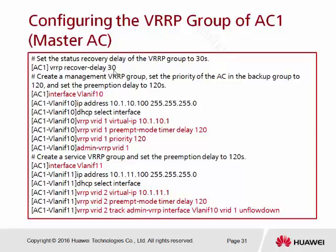We use the VRP command — just look for the red color highlighted commands. The first command is 'vrp' followed by the VRID (virtual router ID). This will be the first virtual router I configure, so I give it ID number 1. For this virtual router I will assign the IP address 10.1.10.1 — this is the virtual IP for virtual router ID 1.